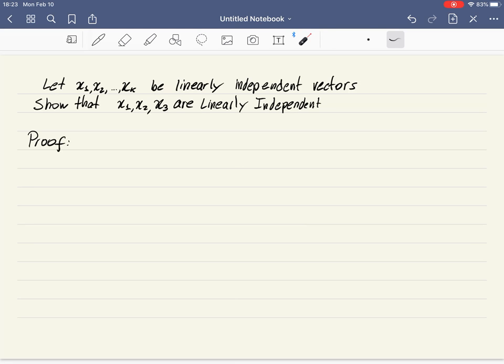So again, we're going to show this by a direct method, which means we're just going to check the definition of being linearly independent. So how does it go? We first start by supposing that there is some linear combination of these three vectors that gives the zero vector.